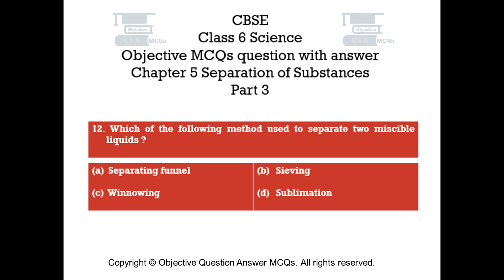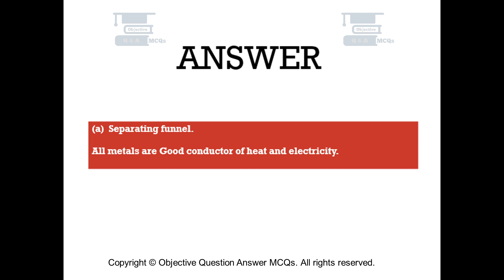Question number 12. Which of the following method is used to separate two miscible liquids? Option A: Separating funnel. Option B: Sieving. Option C: Winnowing. Option D: Sublimation. The right answer is Option A — Separating funnel. The method used to separate two miscible liquids is the separating funnel.